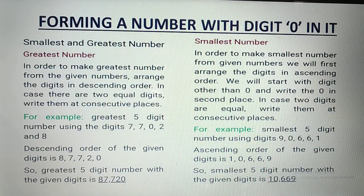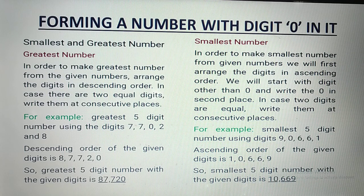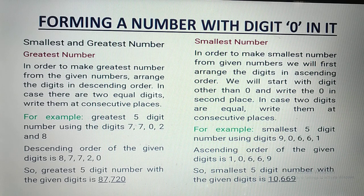Now, forming a number with digit 0 in it. Zero makes a lot of difference. If 0 is among the given digits and we need to form the greatest and smallest numbers, we need to be careful. For the greatest number using digits 7, 7, 0, 2, and 8: we put 8 first, then both 7s, then 2, and 0 last. Zero will be at the end when making the greatest number.